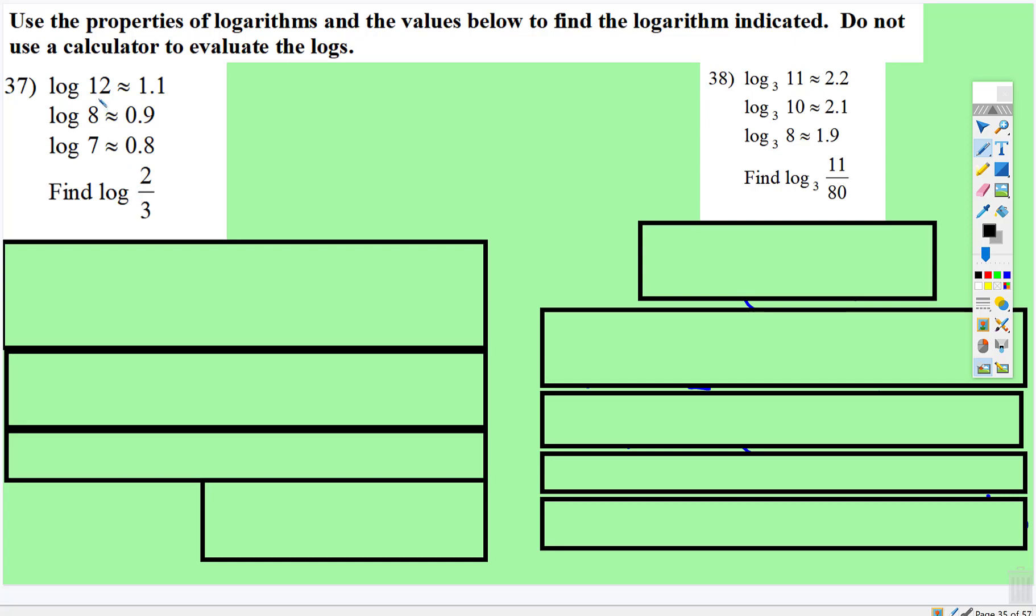So we have log 12, log 8, log 7. We don't have a log 2 or log 3, but look at this ratio. Look at the values that we have. Eight twelfths simplifies to two thirds.